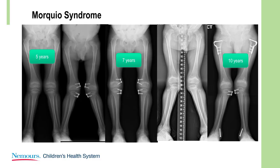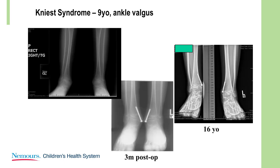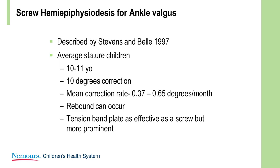Morquio syndrome — very effective, but with Morquio syndrome you've got to do it early. You really want to aim to get them corrected before 10 years of age; after 10, there's very little growth potential remaining. But you can see I did get some correction. At the ankle, I use a screw method of growth modulation — you can see how effective it is. Dr. Stevens has some other thoughts on growth modulation at this level. We know that the tension band plate is as effective as the screw, but I found it more prominent.